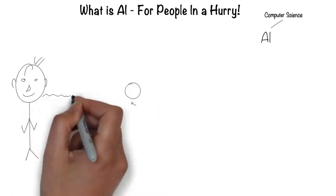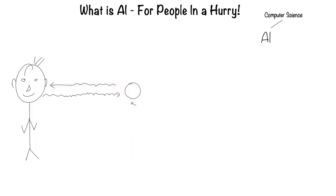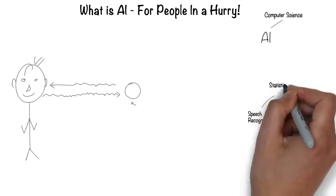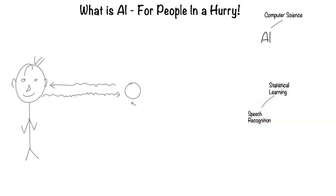Humans can speak and listen to communicate through language. This is the field of speech recognition. Much of speech recognition is statistically based. Hence, it's called statistical learning.